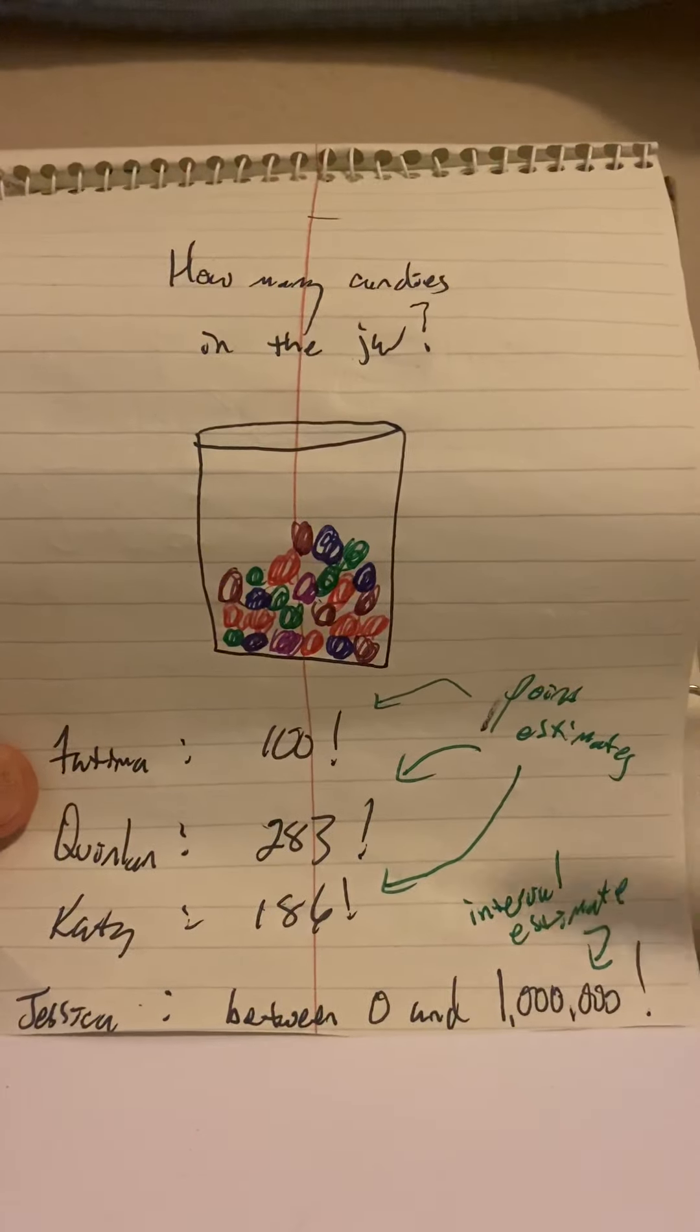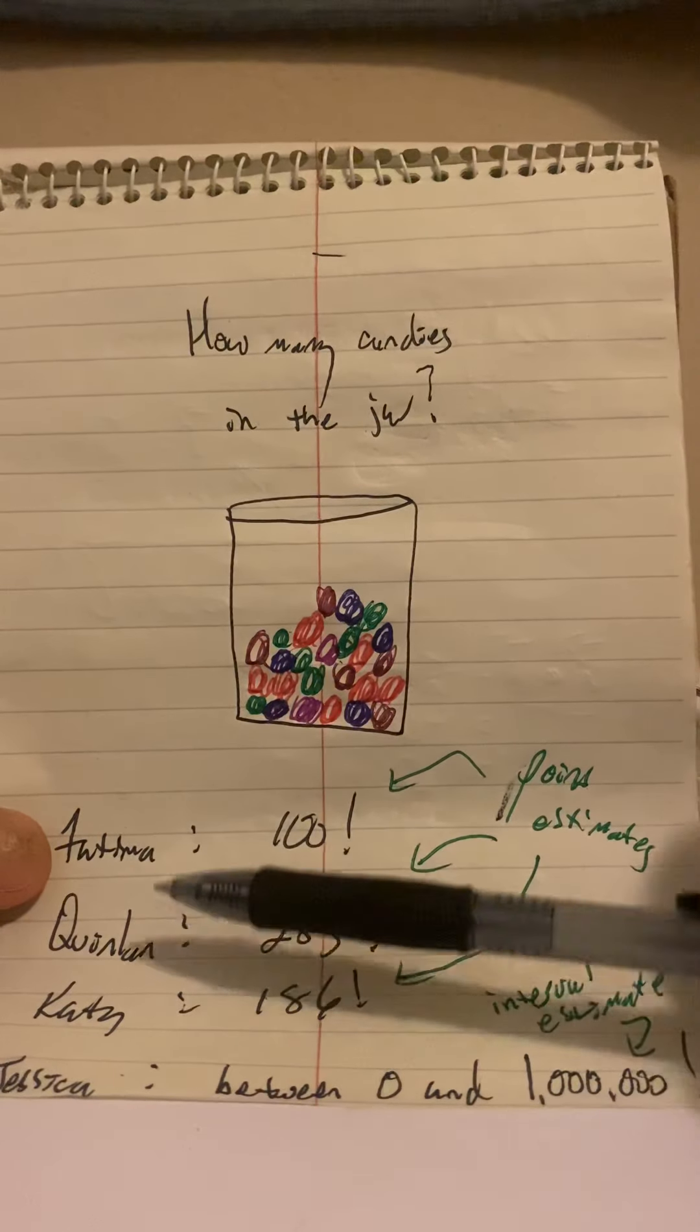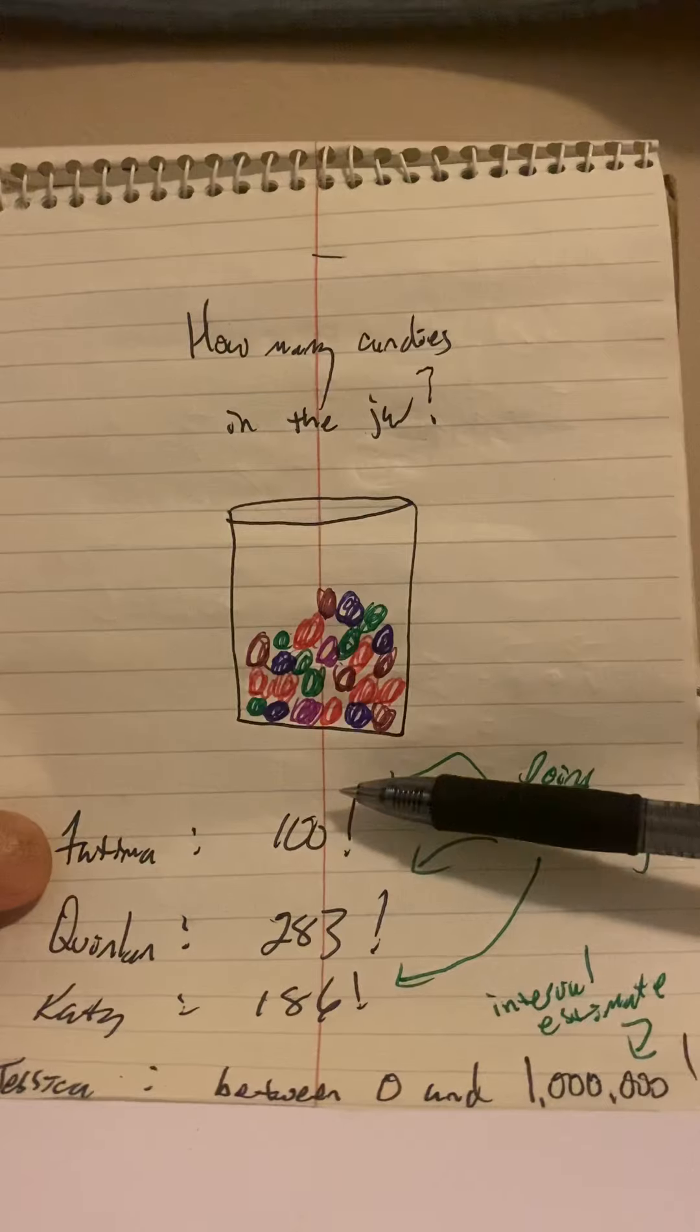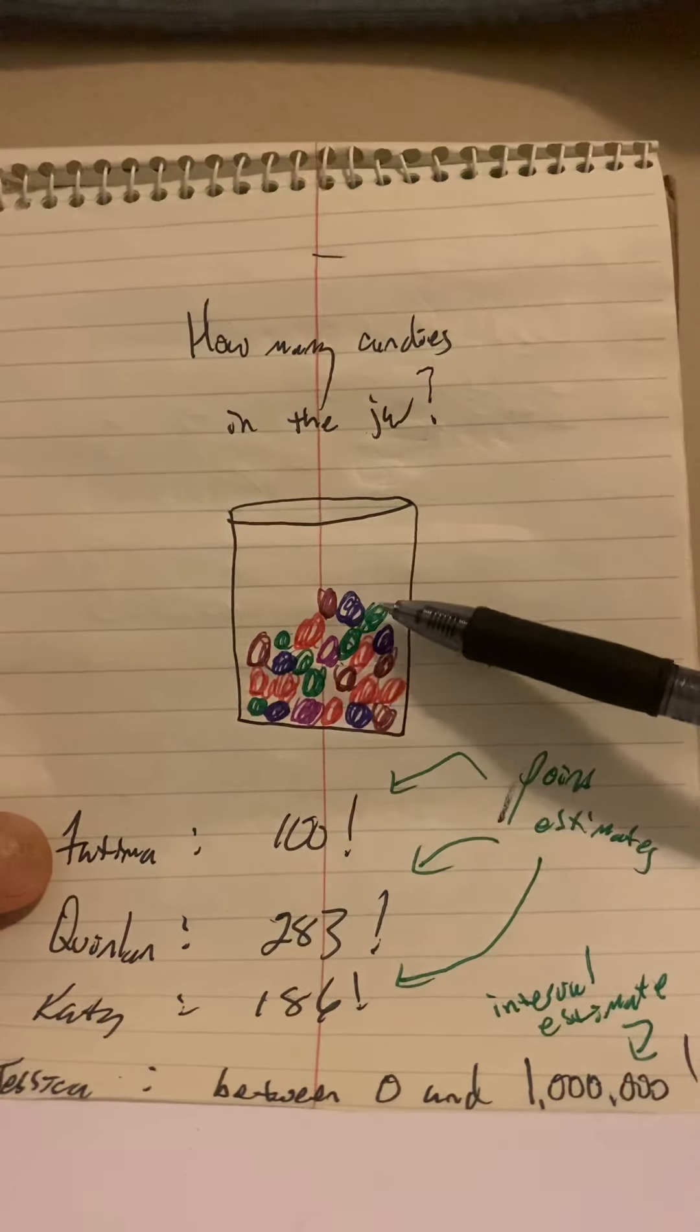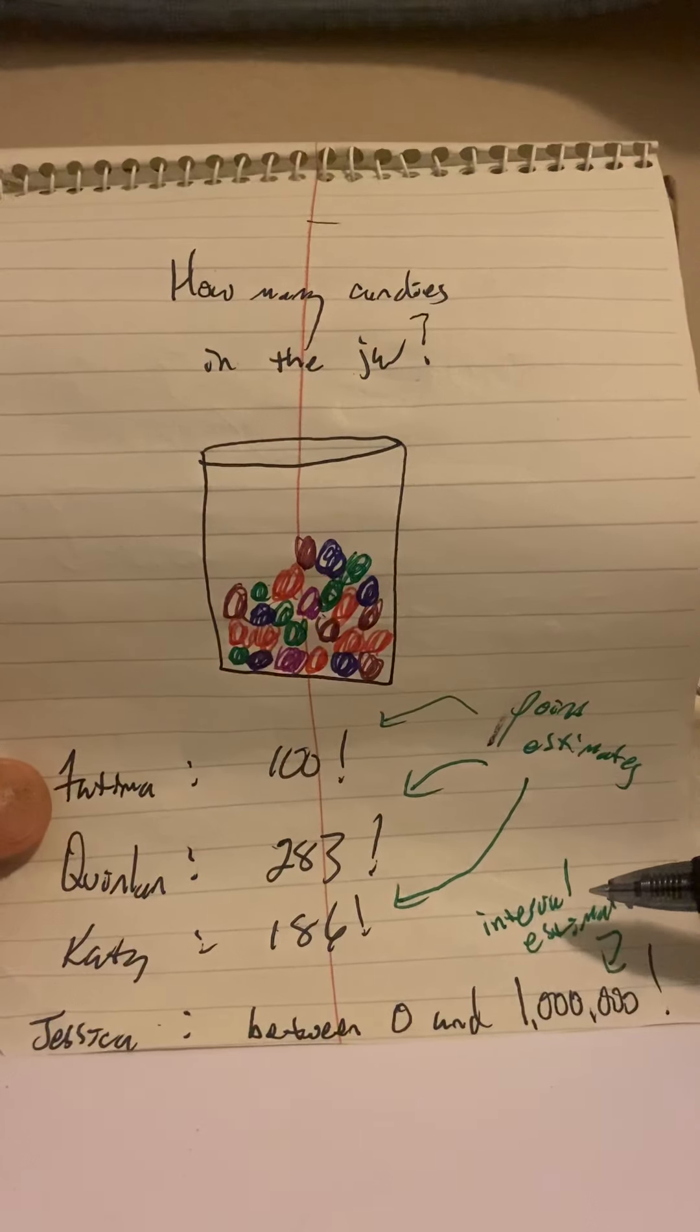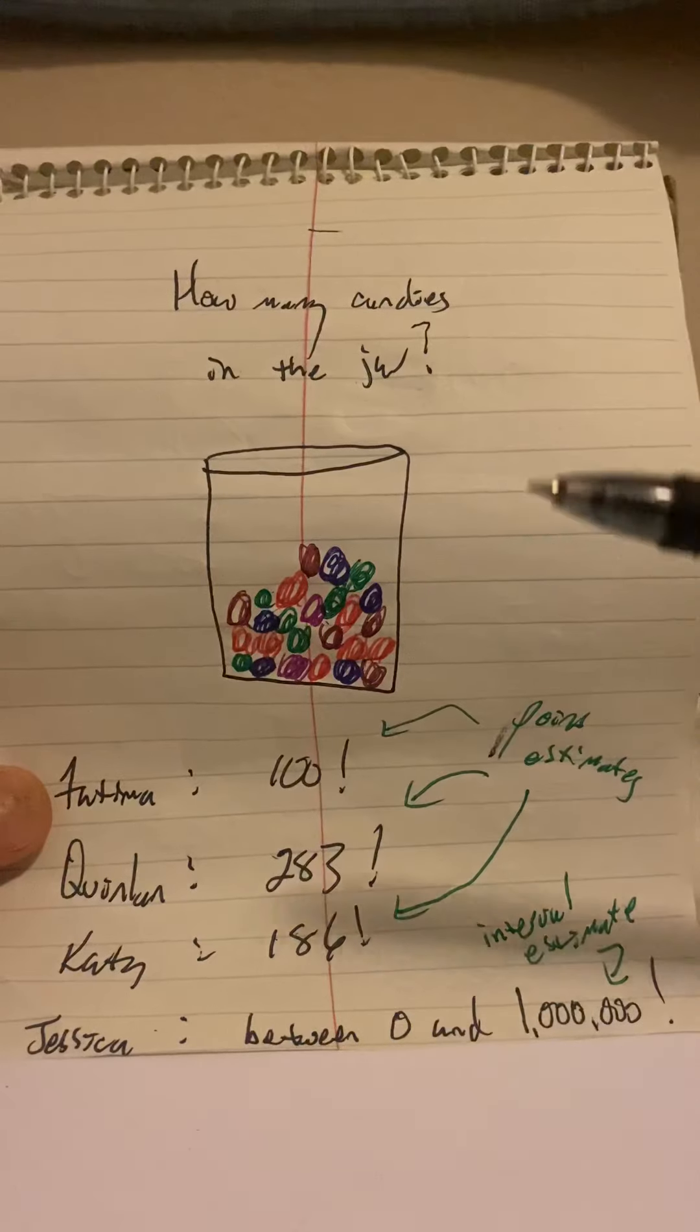Now, the point of this little game is these estimates guessed by Fatima, Quinlan, and Katie, they're all point estimates. They use a single number, a single point on the number line to estimate the number of candies. Whereas Jessica, she used an interval estimate. She did an interval on the number line to guess the number of candies.